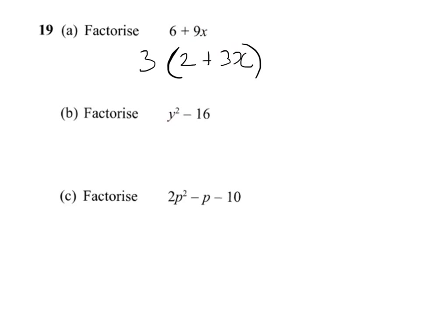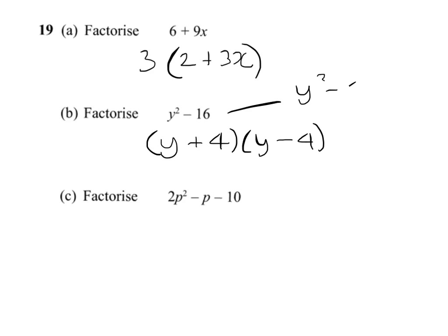Now the next one — this is called the difference of two squares. You've got y squared minus 4 squared. So this is written out as (y + 4)(y − 4). The difference of two squares: 16 is 4 squared, so under those circumstances you're going to have a plus 4 and a minus 4. That gets rid of any y term in the middle, you'll get minus 16 and you'll get y squared.